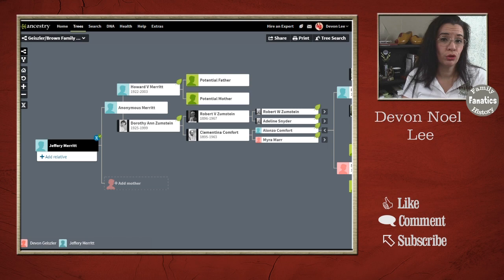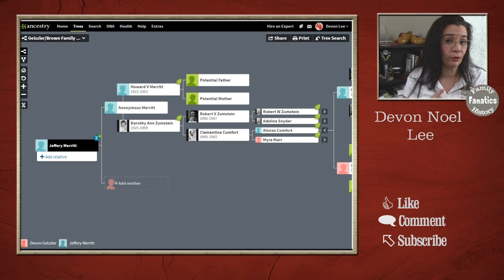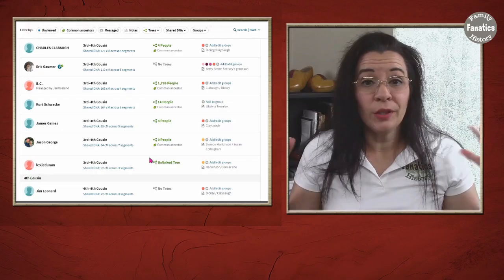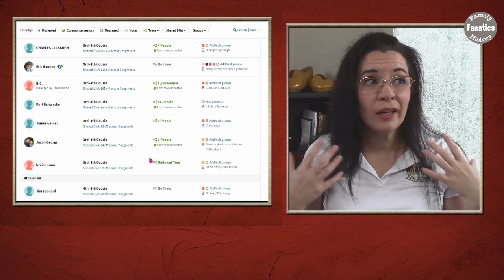One thing to keep in mind, if you do add living people to the Ancestry tree, Ancestry will automatically privatize their information. So only you, when you log in, can see the information about living people. But when other people access your tree, even if it is a public tree, no one will be able to see all the details about the living person. So do keep that in mind.